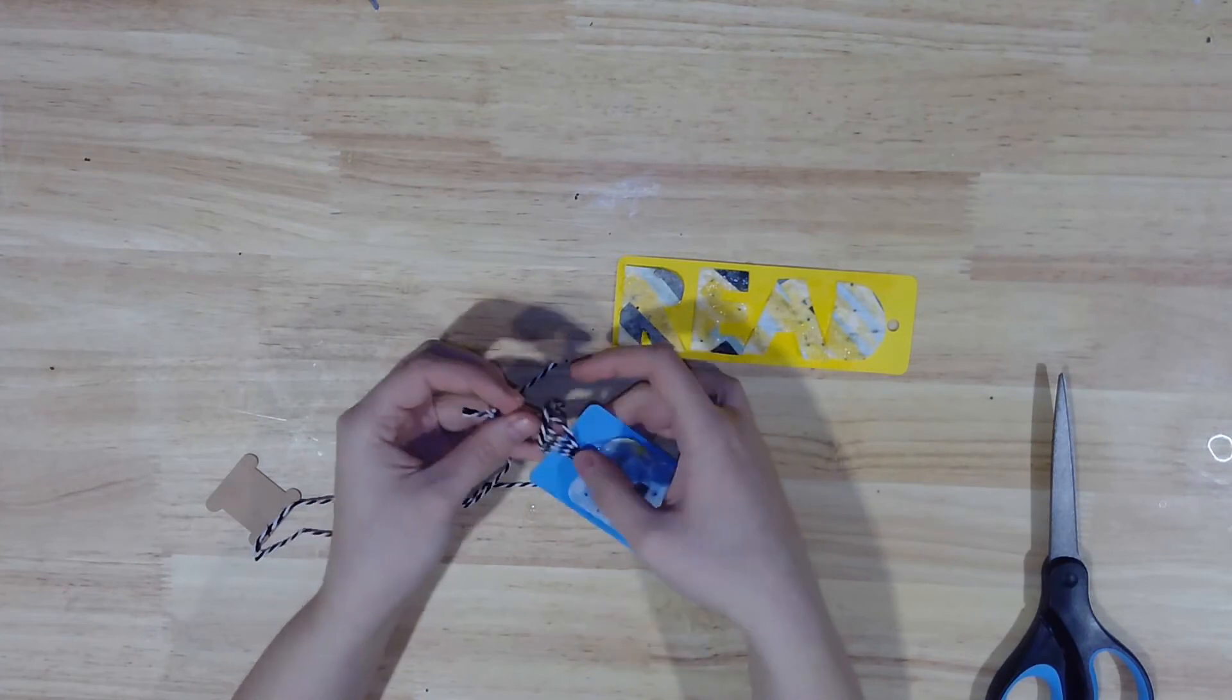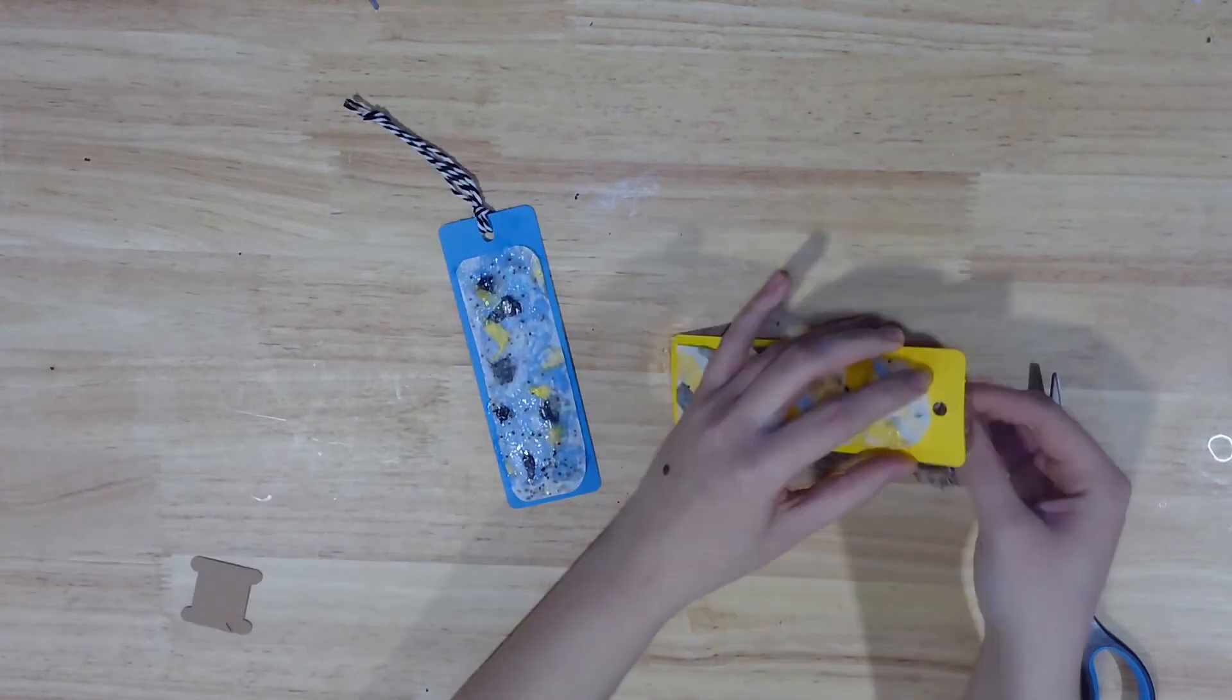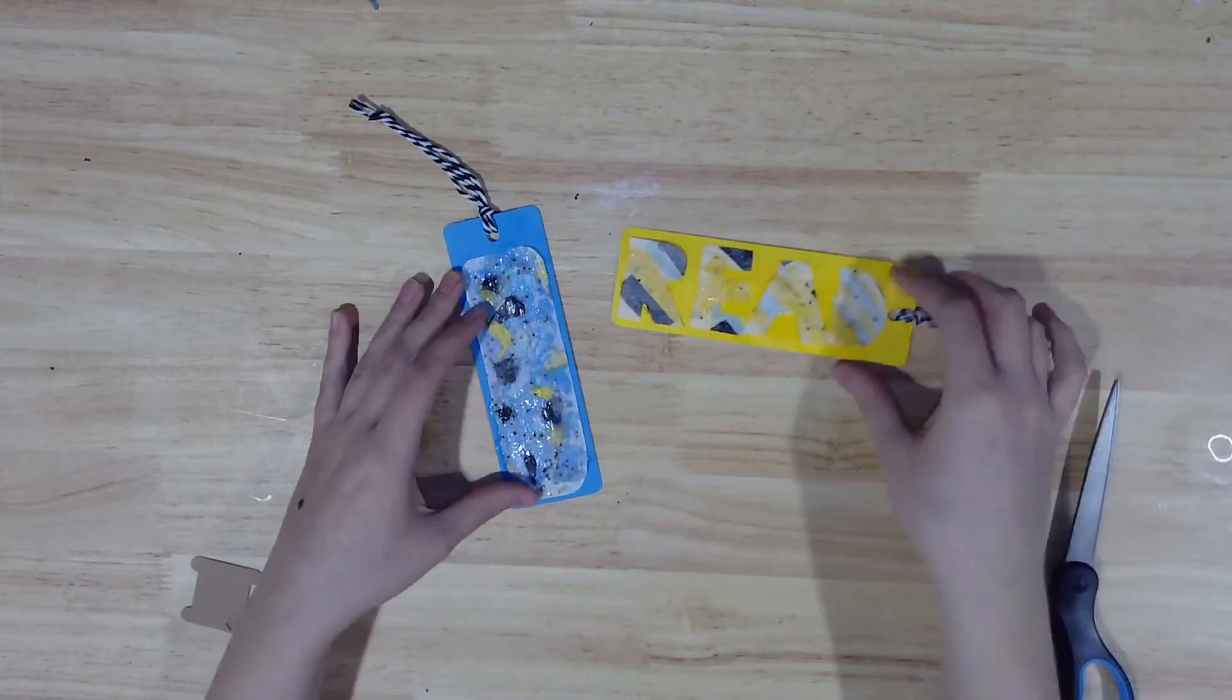When you're done reading and want to plant your bookmark, just remove the twine and put the bookmark under a bit of soil before adding sunshine and water.